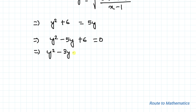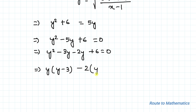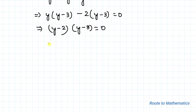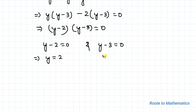Factorizing y² - 5y + 6 = 0, we write it as y² - 3y - 2y + 6 = 0, giving (y - 2)(y - 3) = 0. From here we get y - 2 = 0 and y - 3 = 0, so y = 2 and y = 3.